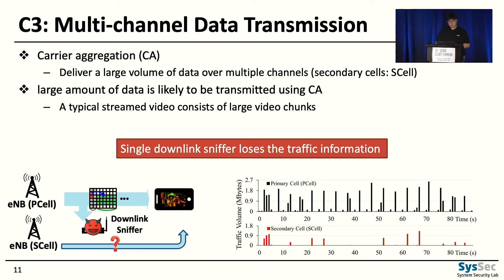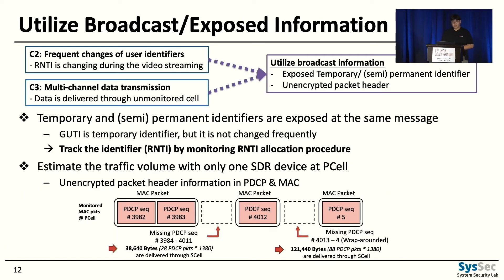Another challenge is carrier aggregation. When video is delivered, modern cellular networks use multiple channels with the help of additional base stations to boost downlink speed. However, from the attacker's perspective, they can only calculate traffic volume for one base station, and therefore fail to monitor the complete traffic.